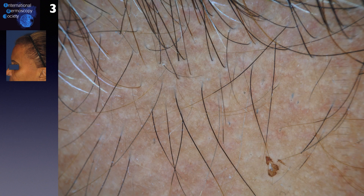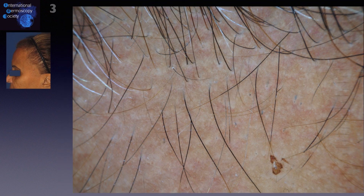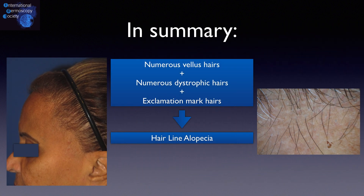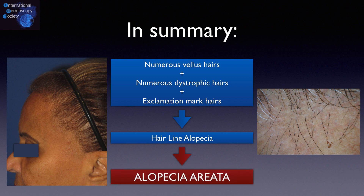Here is another tricoscopy showing many vellus hairs and black dots only. In summary, if we have numerous vellus and dystrophic hairs, even in the hairline, it can be alopecia areata, as in this case. We need to look for exclamation mark hairs as a clue.